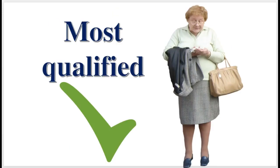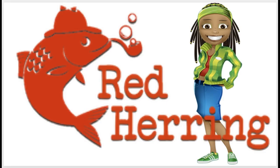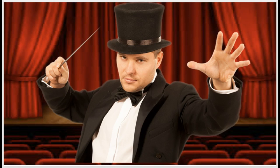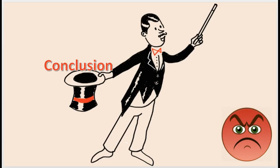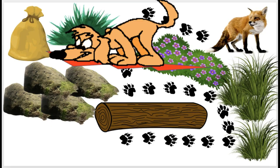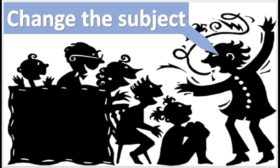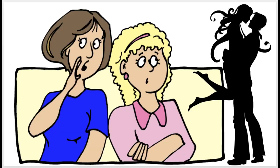But Cindy then changes the subject to John's crush with his neighbor. After distracting Frank, she concludes that Jill Smith is the most qualified for the position. Cindy commits the red herring fallacy because diverting the attention of the audience does not justify any conclusion.